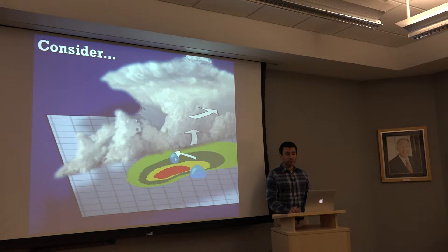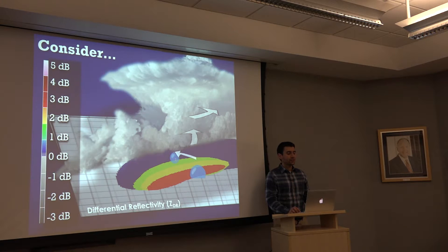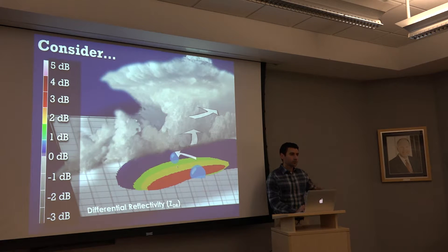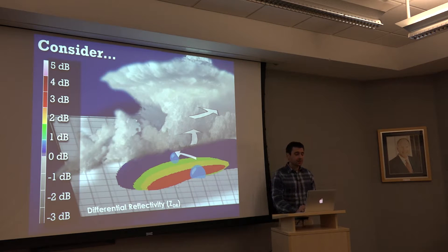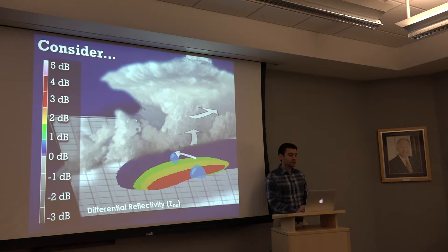What does that tell us about what we should expect with ZDR? If our bigger drops are all falling here on this flank and our smaller drops are all getting pushed farther into the storm, we get high ZDR right here on the edge of that higher reflectivity, and it forms somewhat of an arc shape. This is the ZDR arc — you can see values of 3, 4+ dB — whereas as we get into those smaller drops advected farther downstream, we get lower ZDR.